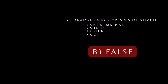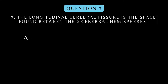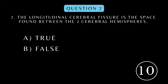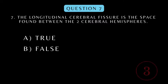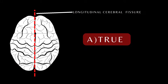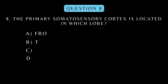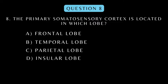True or false: The longitudinal cerebral fissure is the space found between the two cerebral hemispheres. The primary somatosensory cortex is located in which lobe?